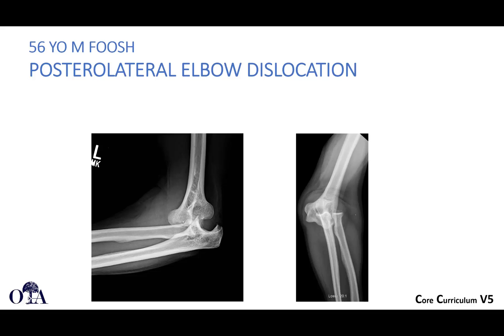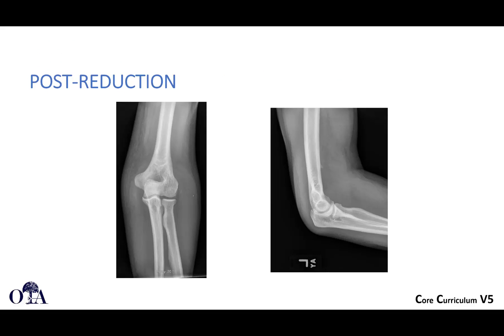Here is an example: a 56-year-old male with fall on outstretched hand, posterolateral elbow dislocation, shown post-reduction. On the AP, a line bisecting the radial head should pass through the middle of the capitellum. On the lateral, avoid double density artifact — obtain perfect lateral views to confirm the joint is congruent.